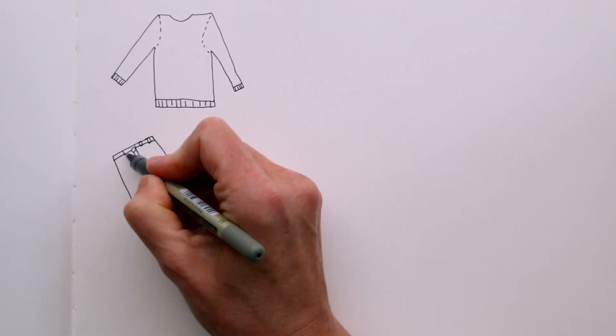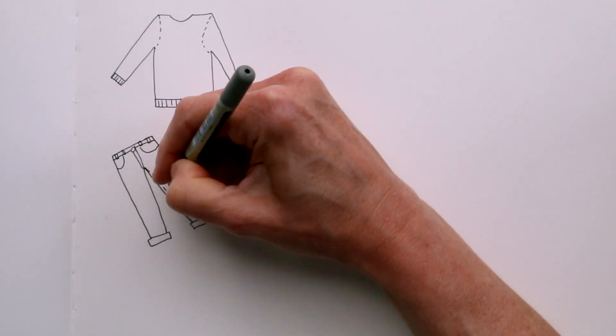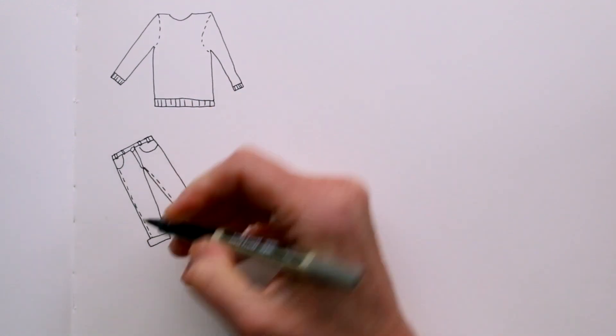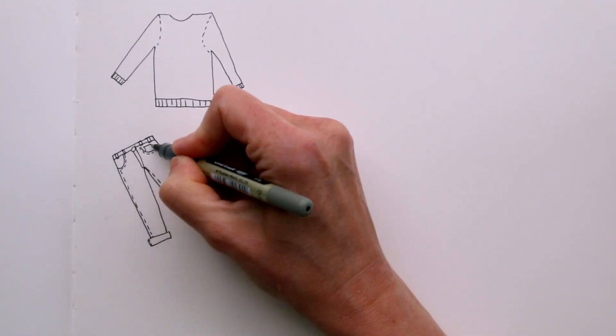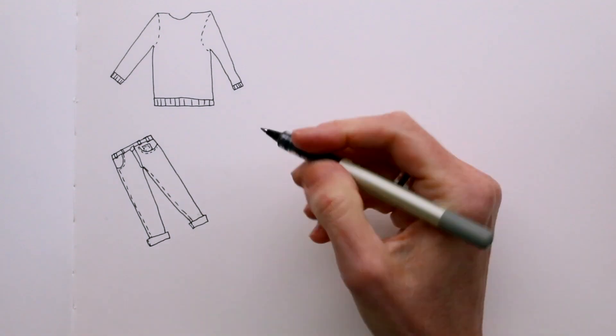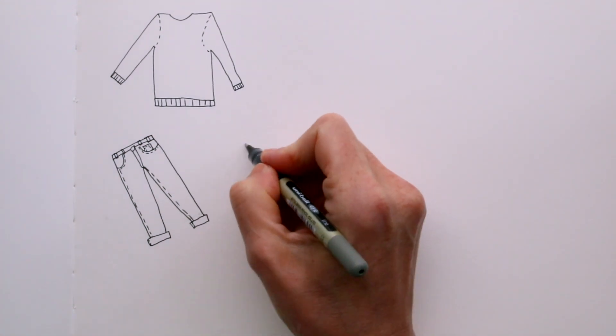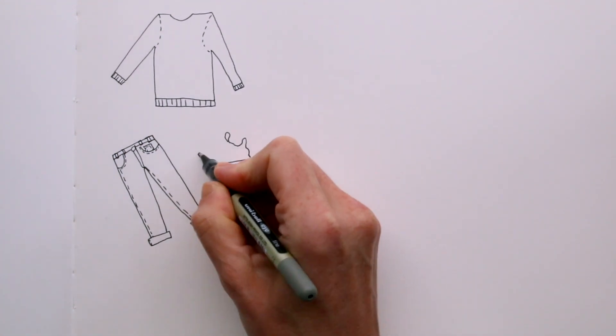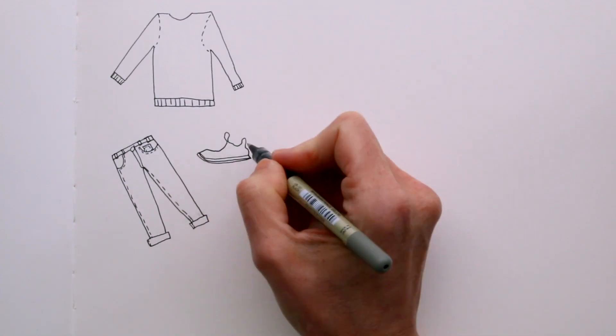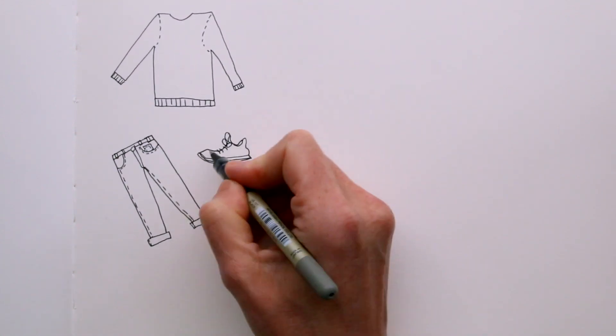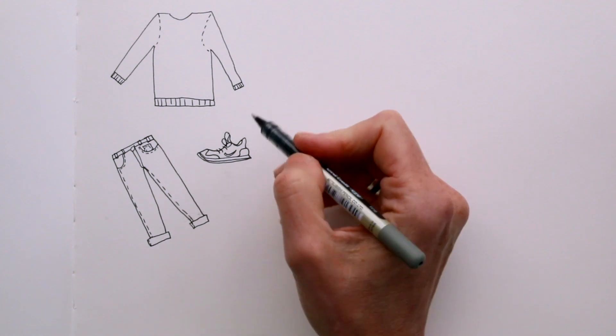Just a few details to show that they are jeans. I think the stitching is always a great indicator for jeans. And I think when I add a little bit of color, it will actually become more clear that it's jeans. And I can also write it right next to it.